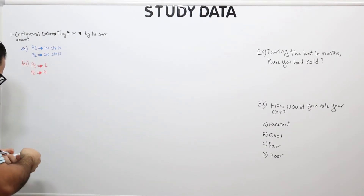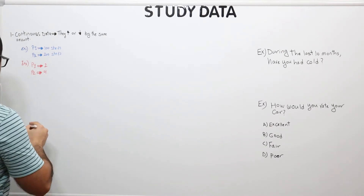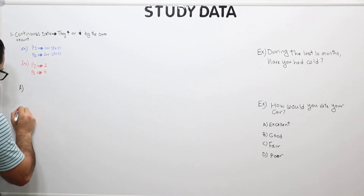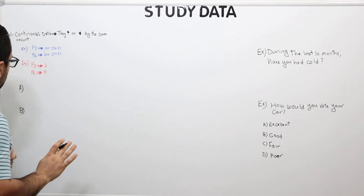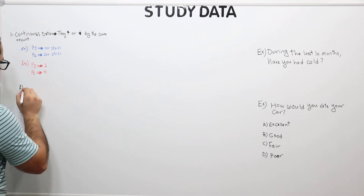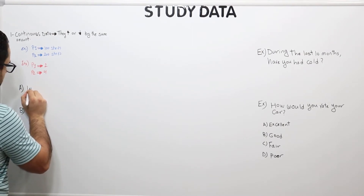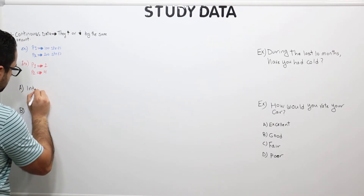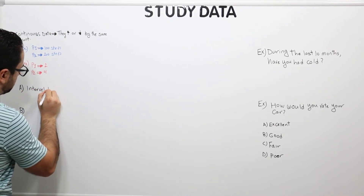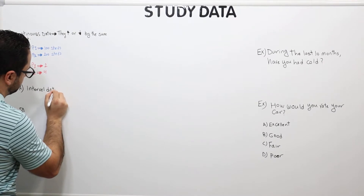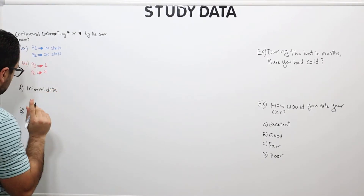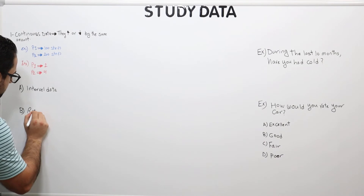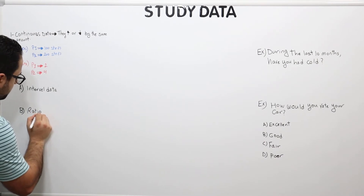Continuous data has two types — I'll refer to them as A and B. Type A is called interval data, and type B is called ratio data.